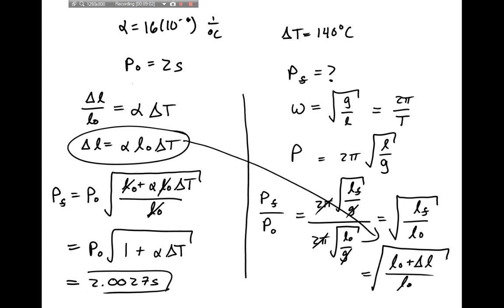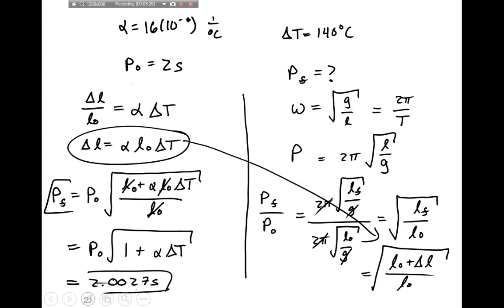So the initial period was two seconds and the final period is basically still two seconds. However, if this were a clock, after a thousand oscillations, the clock would be off by 2.7 seconds. So gradually over time, a clock using a pendulum to measure time will drift off.